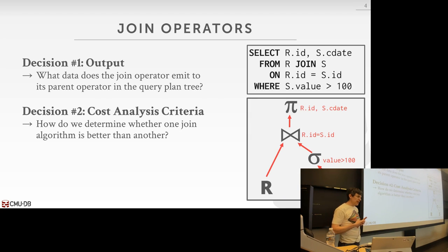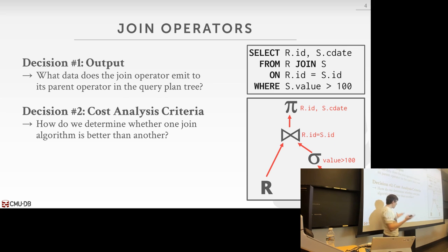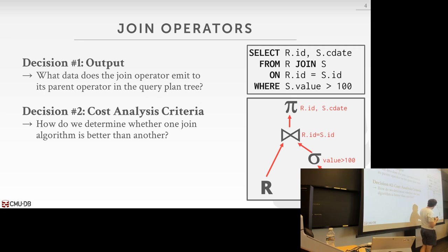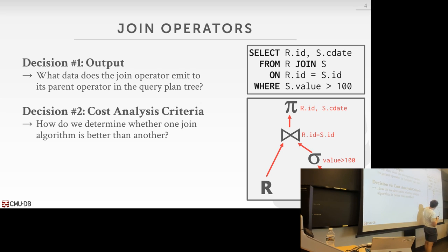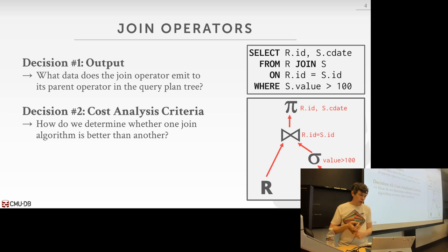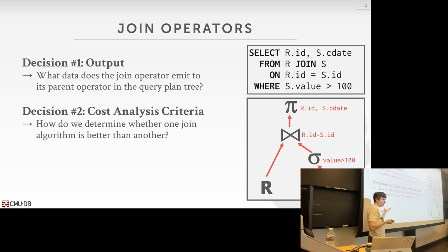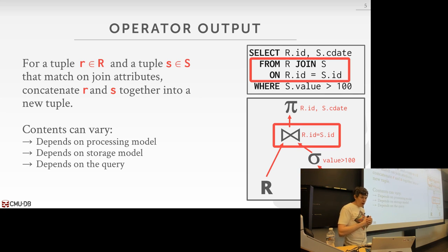Before discussing the algorithms, there are design decisions we have to make. The way to understand a query plan is we're taking the relational algebra of a SQL query and converting it into a directed graph or tree structure. At the leaf nodes we're accessing the tables, feeding tuples up as input into parent operators. So in the join operator, the left side is the outer table and the right side is the inner table. We need to figure out what the output of our join operator is — what actual bits we're sending up to the parent.